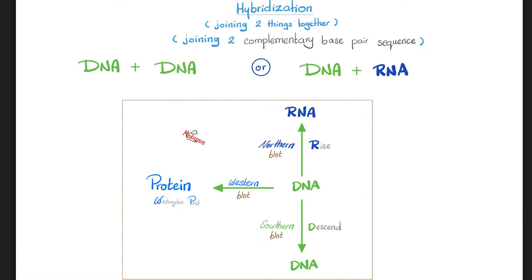Hybridization means joining two complementary base-pairing sequences together. It could be between DNA and DNA — we call this the southern blot — or DNA and RNA — we call this the northern blot. Mnemonic: put DNA in the center; if you go up rising to meet RNA, you go north — northern blot. Conversely, if you pair DNA with DNA, you are descending — southern blot. We also have western blot: DNA with proteins. Mnemonic: Washington Post — WP — which is a western newspaper. One sequence is the known DNA probe, and the other is the unknown DNA of interest.